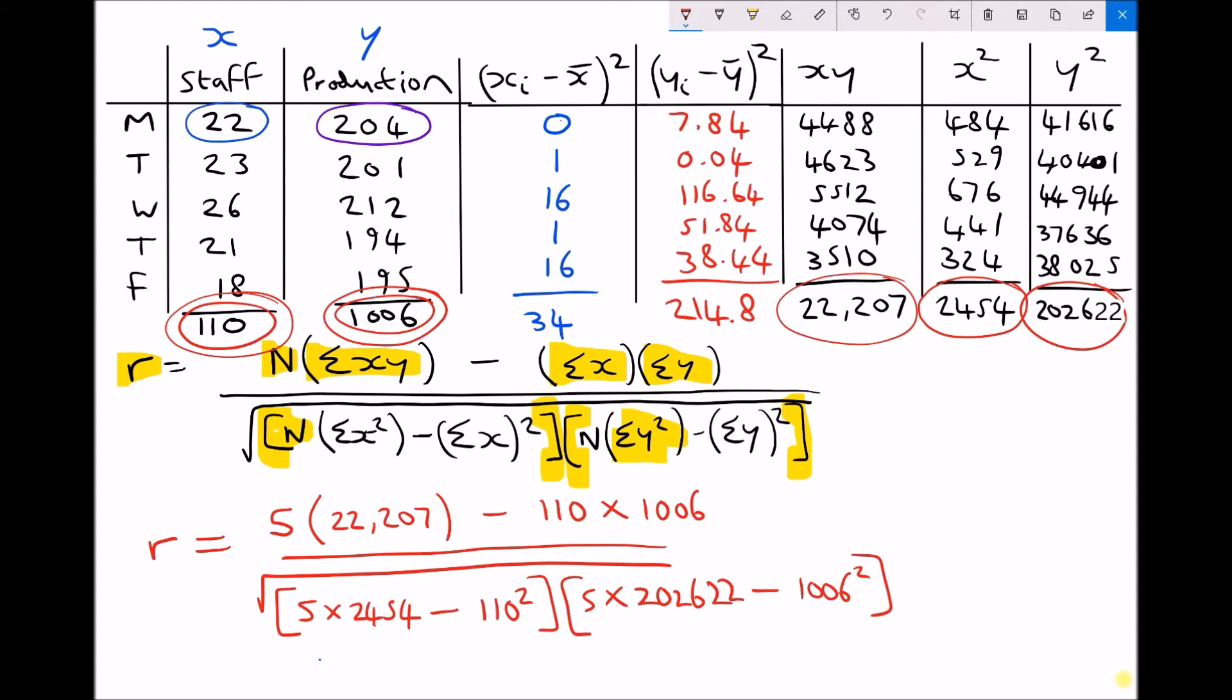Now I'm going to calculate the top and bottom of my fraction separately there. And calculating the top of my fraction I get 375. Nice round number. And on the bottom of my fraction I get 427.3 to 1 decimal place. Therefore, my product moment correlation coefficient comes out to be 0.88 to 2 decimal places.